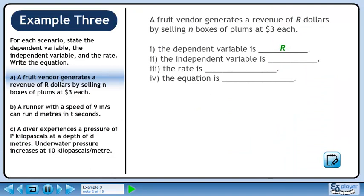The dependent variable is R. The independent variable is n. The rate is $3 per box. The equation is R equals 3n.